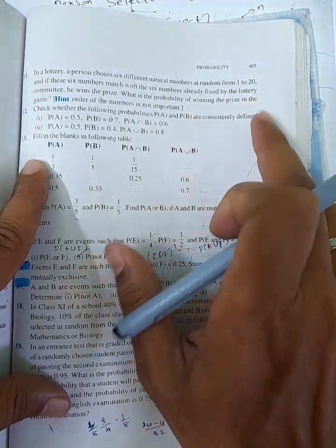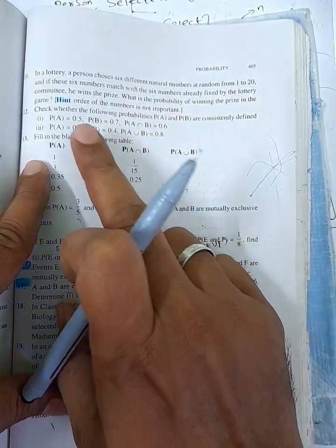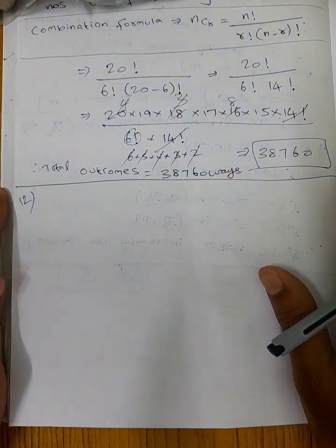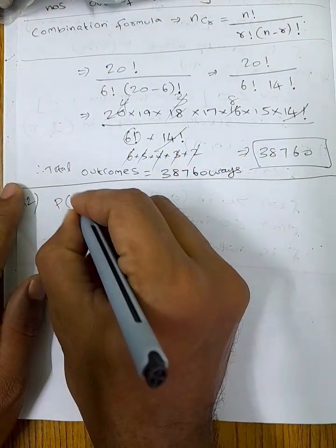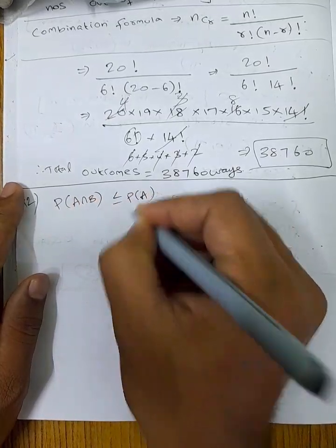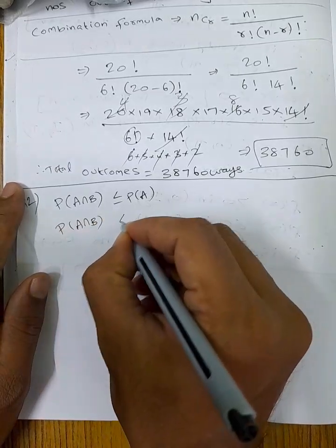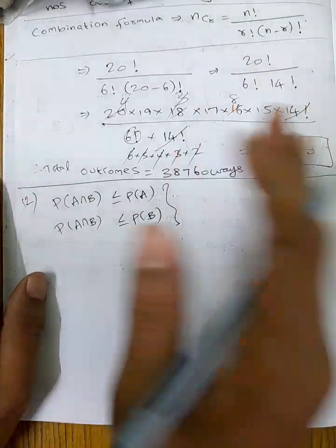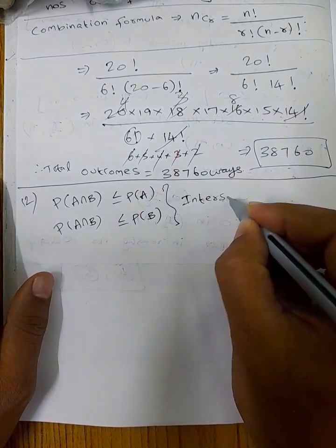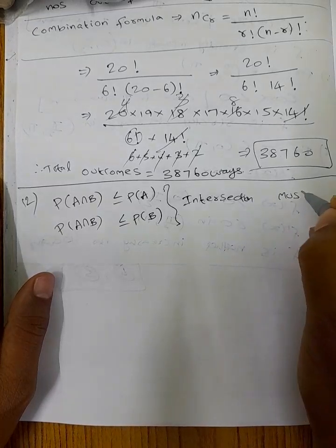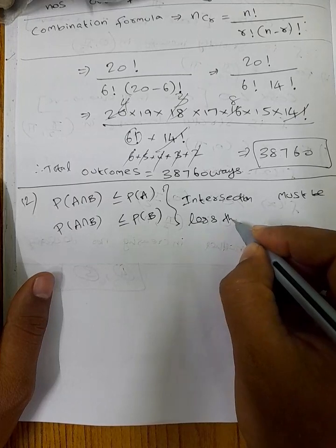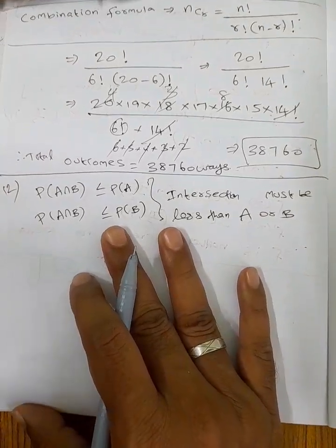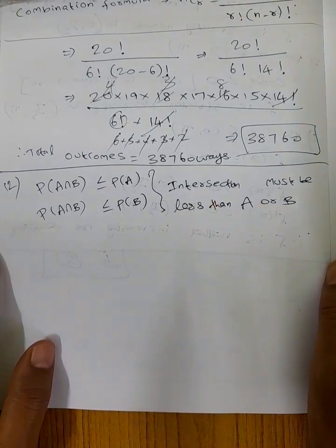Check whether the following probabilities P(A) and P(B) are consistently defined. The condition for consistently defined is: P(A∩B) must be less than or equal to P(A), and P(A∩B) must be less than or equal to P(B). So intersection must be less than both A and B. If consistent, otherwise not consistent.